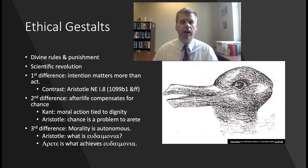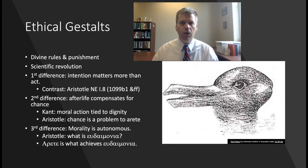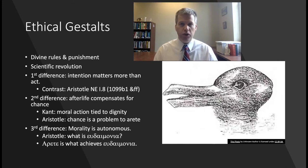The third difference is that for Kant, moral action must come from a perspective independent of your desires — morality is autonomous. For Aristotle, we first need to figure out what it is to live well, what eudaimonia is, and then ethical virtue — arete — is what helps achieve eudaimonia. So there's no gap between one's self-interest and what morality requires.